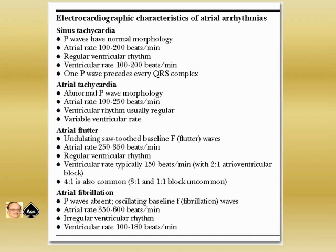What is atrial tachycardia? Abnormal P-wave morphology. Atrial rate 100 to 250 beats per minute. Ventricular rhythm is usually regular and the ventricular rate may be the same.